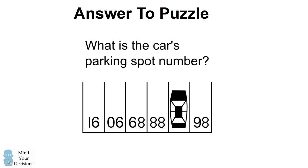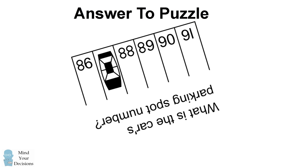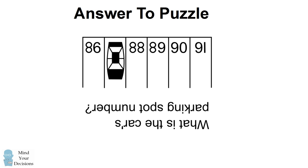To solve the problem, you have to think about it from the car's perspective. The car would have been driving into the spots, and we need to flip the diagram upside down. Now the numbers have a clear pattern, and it's obvious the car would have been parked in spot number 87.